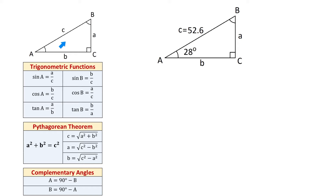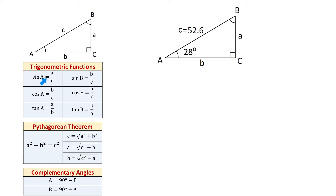Angle A is opposite of side A, angle B is opposite of side B, and angle C is opposite of the hypotenuse. Below, we have sine, cosine, and tangent of angle A and angle B. Sine of angle A equals the opposite side A divided by hypotenuse C.